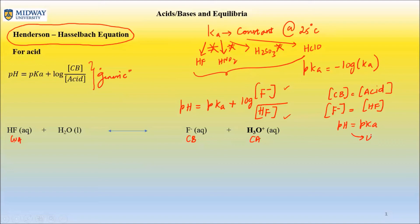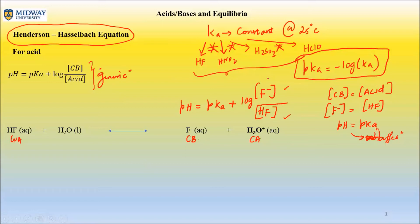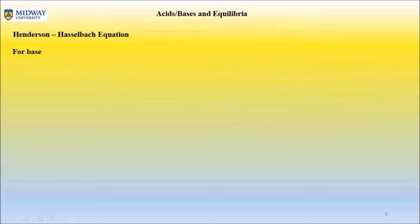For the HF case specifically, when [F-] equals [HF], the log term becomes log(1) which equals zero, so pH equals pKa. A buffer is something that resists change in pH. The condition for a buffer is when the concentration of conjugate base equals the concentration of acid — that is the generic condition. This is the fifth equation to add to your growing list, making six total so far.